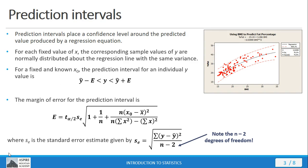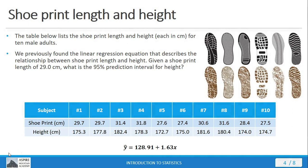Let's look at an example problem to illustrate what we've just learned. We've seen before this example problem looking at shoe print length and height, looking at the correlation between them, and we generated a regression equation that you see there at the bottom of the screen that describes the relationship between shoe print length and height. If we're given a shoe print length of 29 centimeters, what is the 95% prediction interval for the height?